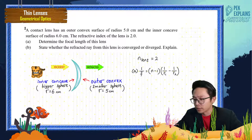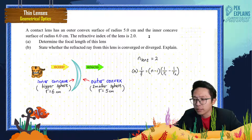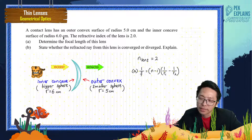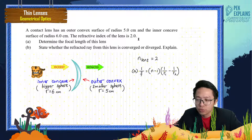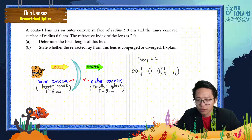Let us look at this question. A contact lens has an outer convex surface of radius 5 cm and an inner concave surface of radius 6 cm. The refractive index of the lens is 2. Determine the focal length of this lens and state whether the refracted ray from this lens is converged or diverged.